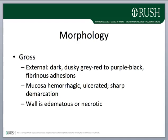Grossly, the affected segment of bowel has a dark, dusky gray-red to purple-black appearance. You often see thin fibrinous adhesions from the infarct. The mucosa is diffusely hemorrhagic, ulcerated, and usually sharply demarcated from surrounding better-vascularized mucosa. The wall is edematous and may become frankly necrotic and transmural.